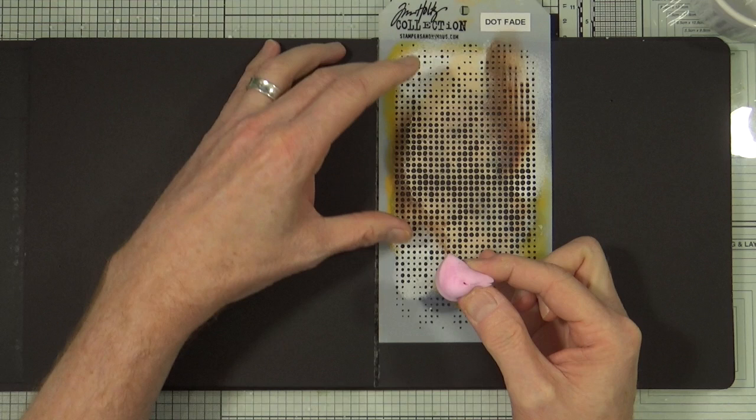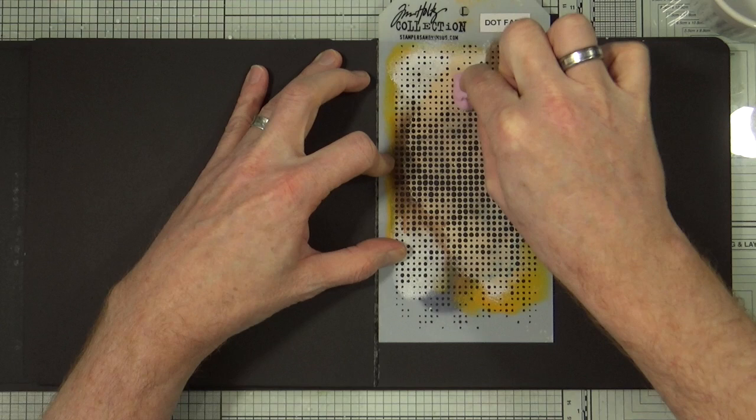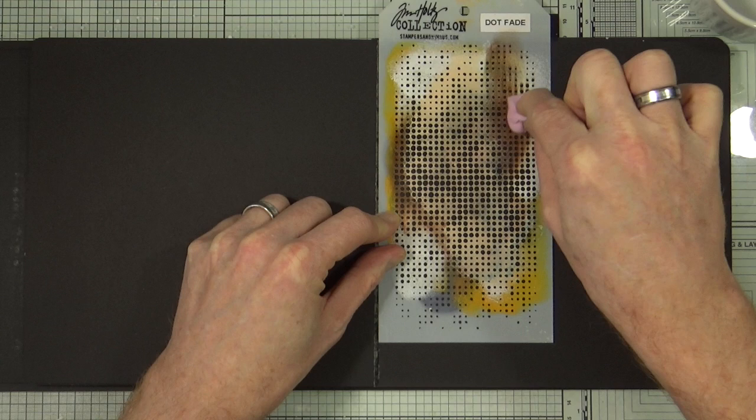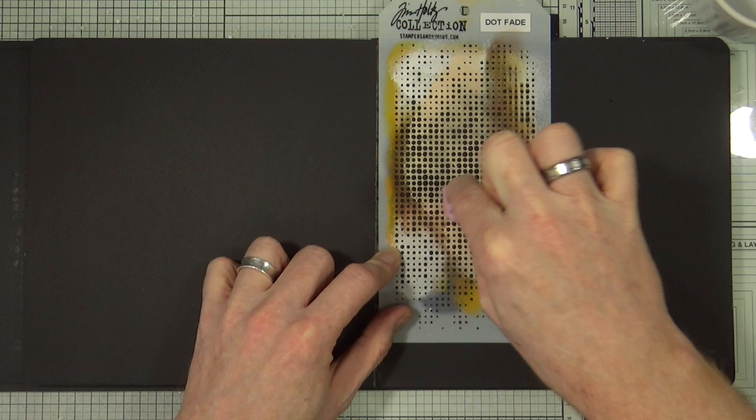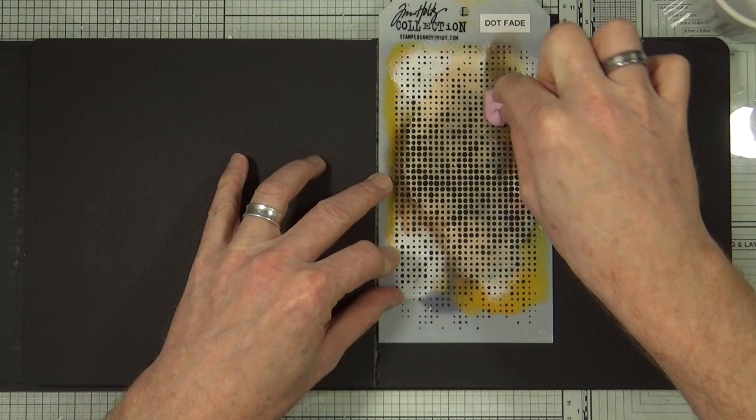And then the experiment I'm going to do is just going to stencil with the bleach through onto the black page below. Now hopefully, if I am correct, I am hoping that the bleach will react to the paper colour of the journal.